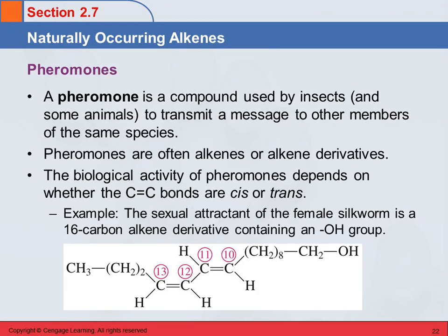There are a lot of naturally occurring alkenes, and one class are called pheromones. You may have heard of those. Pheromones are used by insects and some animals to transmit messages to other members of the same species. Some of these are involved in sexually attracting other moths or whatever. A lot of pheromones are alkenes or alkene derivatives.